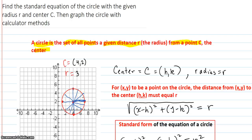Because of that, for (x, y) to be a point on the circle, it has to be a distance 3 away from the center. So for (x, y) to be a point on the circle, the distance from (x, y) to the center (h, k) must be r.